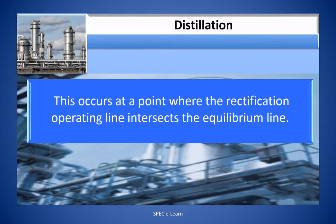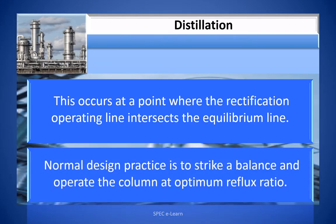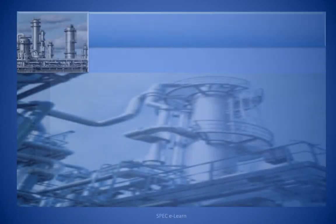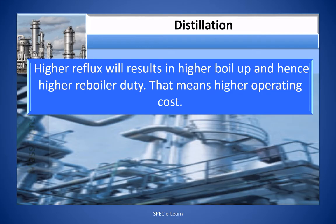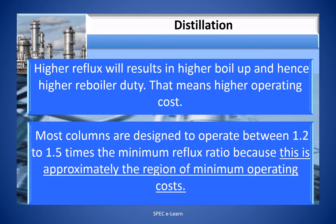This occurs at a point where the rectification operating line intersects the equilibrium line. The normal design practice is to strike a balance and operate the column at an optimum reflux ratio. Higher reflux will result in higher boil-up and hence higher re-boiler duty, meaning higher operating cost. Most columns are designed to operate between 1.2 to 1.5 times the minimum reflux ratio, because this is approximately the region of minimum operating cost.